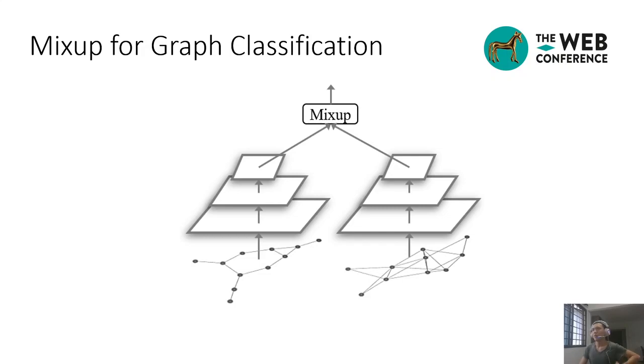We mix the graph-level representations for the mixup on graph classification, which encodes both node attributes and graph topology. Graph neural networks utilize a readout function to summarize the node-level embeddings into a graph embedding. Graph neural networks embed the complex and irregular graph structures into embedding vectors of fixed dimension. We conduct mixup for graph classification in the embedding space, as shown in this figure. Finally, the interpolated graph-level embedding will be passed to a multilayer perceptron, followed by a softmax layer to produce the predicted distribution for the target classes.